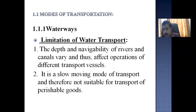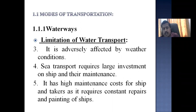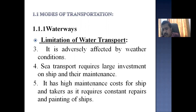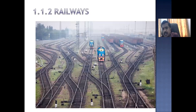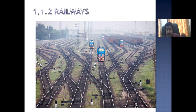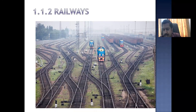If urgent transport is needed — for example to Dubai — we would not use waterways; we would use roadways or airways, the fastest mode. Waterways are adversely affected by weather conditions. Sea transport requires large investment in ships and their maintenance. Companies that construct big vessels and ships face high initial costs, and regular maintenance and painting further add to expenses. That is the limitation of waterways.